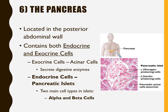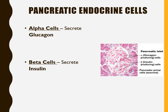Within the pancreatic islets there are alpha cells and beta cells. Alpha cells secrete glucagon and beta cells secrete insulin. Glucagon signals the liver to release glucose from glycogen storage, raising blood sugar — useful when we haven't eaten and need glucose for brain function. Insulin signals body cells to take up glucose from the blood and promotes storage of glucose as glycogen in the liver, lowering blood sugar.